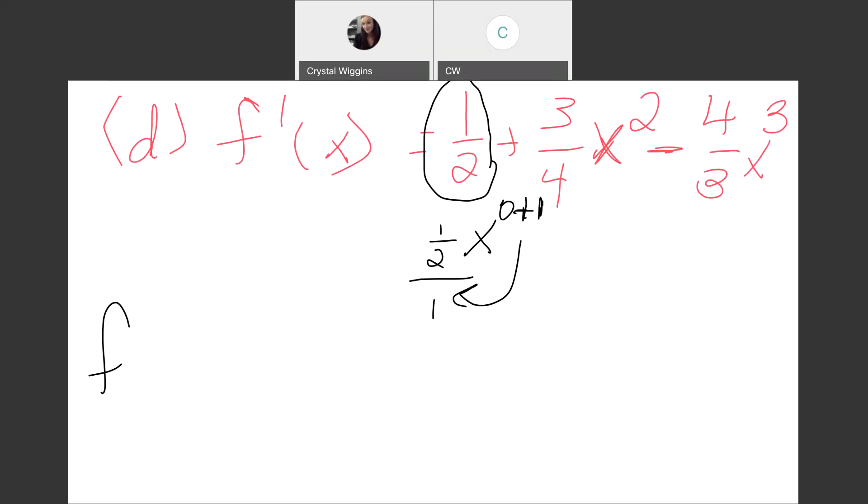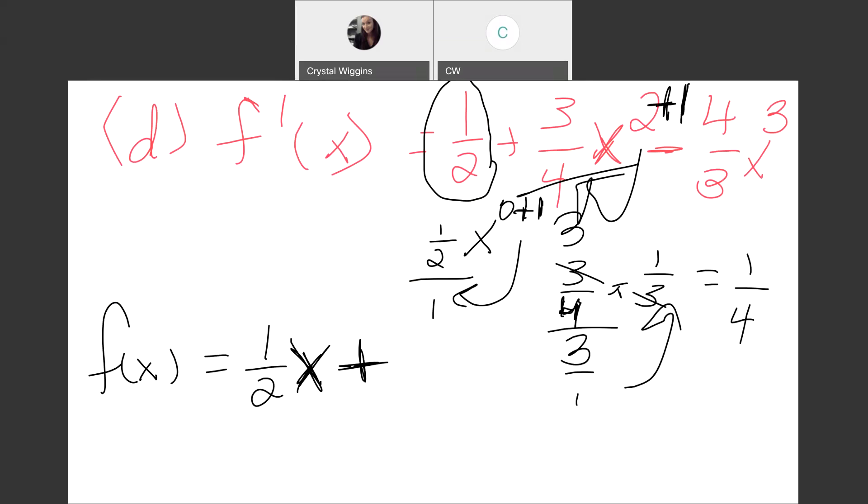So we have the original function first term is one half x plus, now we add one to two to get three and divide by three. So that gives us three fourths divided by three over one. If we flip and multiply, we get three fourths divided by three. So we're ending up with one fourth x cubed.